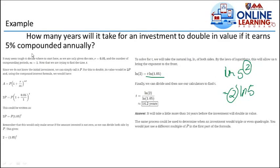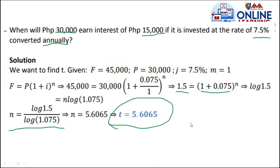So for example, if you invest 10 million, after 14 years it will become 20 million if the interest is 5% compounded annually. The same process could be used to determine when an investment would triple or even quadruple. We just use a different multiple of P in the first part of the formula. Another example: when will 30,000 earn interest of 15,000 if invested at the rate of 7.5% converted annually?